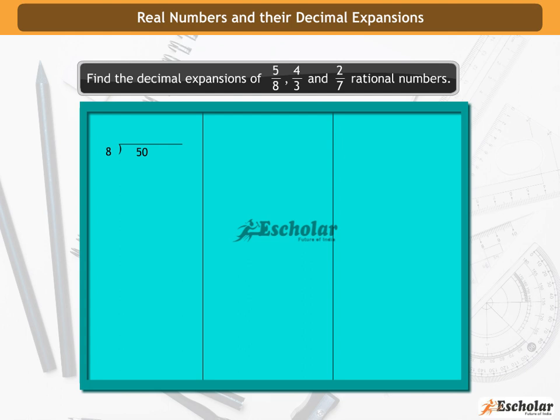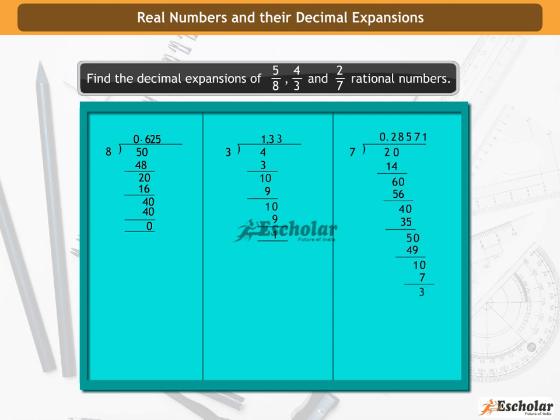We use the long division method. Here we can see that in one case the remainder is 0 and in the other two cases it is not. Therefore, we can now have two separate cases.